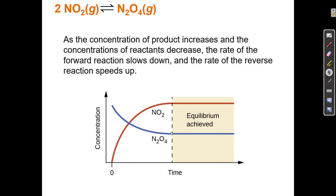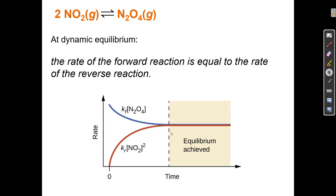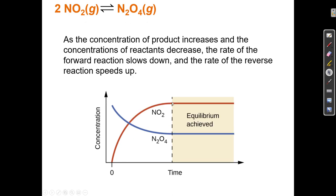The concentration at equilibrium does not change — it becomes constant. But the concentrations at equilibrium of reactant and product are not necessarily the same. If I start with 100% reactant and 0% product, that doesn't mean I'm going to end up with 50-50 when equilibrium is achieved. Sometimes that's true, but more often it's not — the concentrations are not equal at equilibrium. What is equal at equilibrium are the rates of the forward and the reverse reaction.